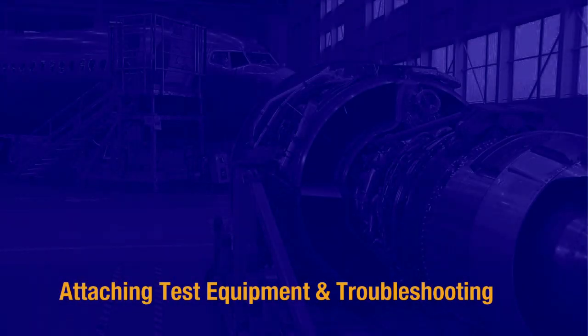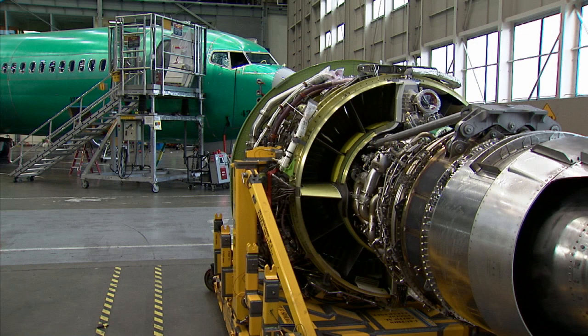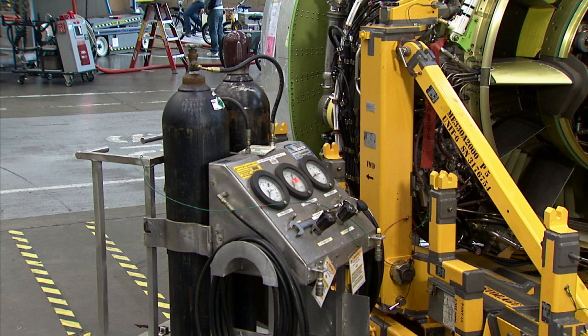Now let's see where to attach test equipment and some troubleshooting examples. CAUTION: Make sure to turn off supply pressure before removing any pneumatic lines, hoses, or fittings. Simple test equipment has been developed to aid in troubleshooting. The equipment consists of hoses, gauges, regulators, and fittings. You will also need a source of supply pressure — in our examples, we'll be using nitrogen. See your AMM for more information. You use the nitrogen and the test supply assembly to simulate engine supply pressure in the system, and the control pressure gauges, hoses, and fittings to monitor the control pressure.